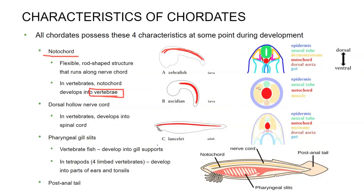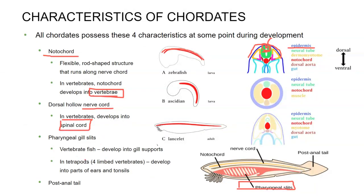In rudimentary organisms, the notochord is a hollow hydraulic tube that helps stiffen their body. It is developed from the epidermis, which creates a little dip that closes in on itself and becomes that hollow notochord tube. The dorsal hollow nerve cord is what develops into the spinal cord in vertebrates. They all have pharyngeal gill slits — even you and I have pharyngeal gill slits during our embryonic development. They don't always stay there; in higher vertebrates, these pharyngeal gills develop into other parts of the body, such as ear bones and tonsils.